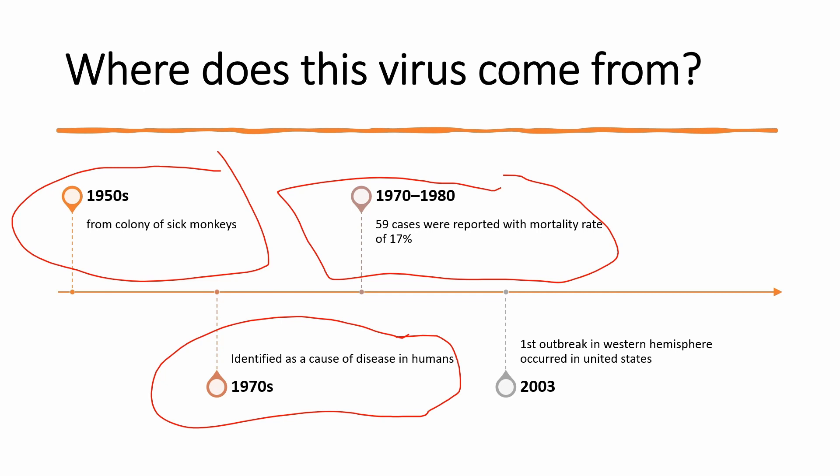The first outbreak in the Western Hemisphere occurred in the United States in 2003. That outbreak was linked to prairie dogs, which appeared to have acquired the virus from African rodents when the two species were housed at a distribution center in Illinois.